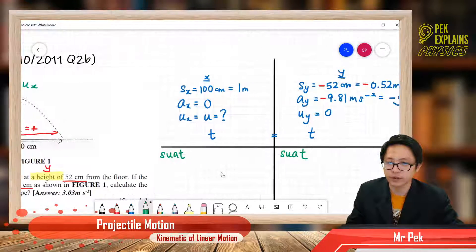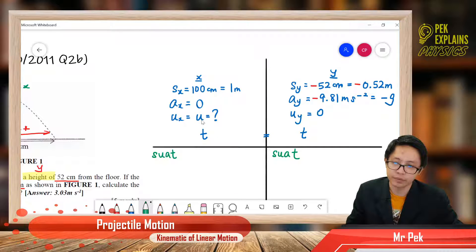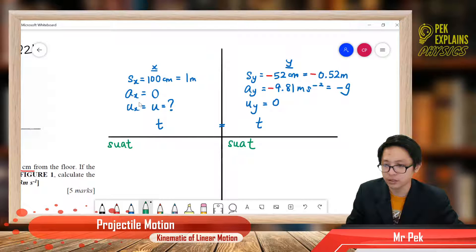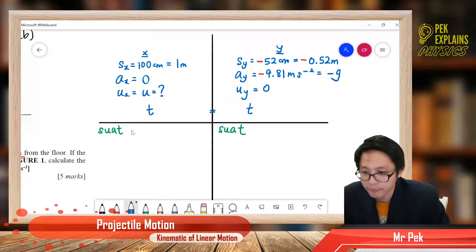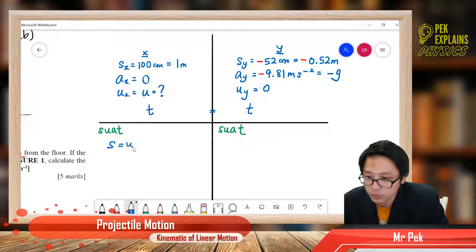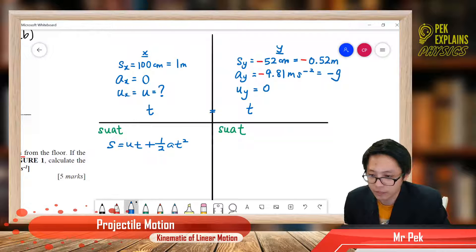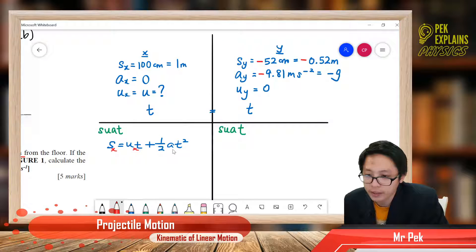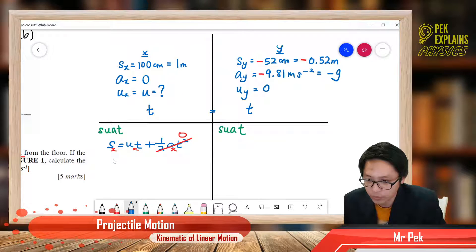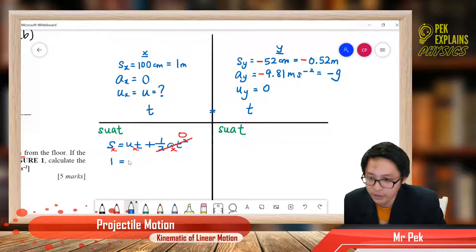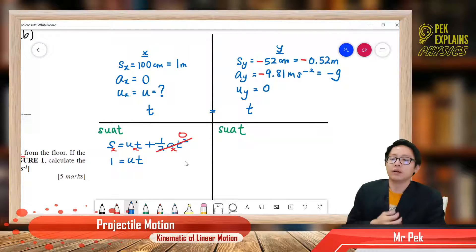Now let us find. For x component, we have SUAT, so we can use the formula SUAT. Let's apply the formula. We have the formula S equal to ut plus half a t square. But this is x component, so all these are x. Ax is 0, so we can say half a t square is 0. Now we can substitute the information. Sx is equal to 1 meter, equal to ux times t. Ux is u, but t we don't have. So we need to go to the y component.